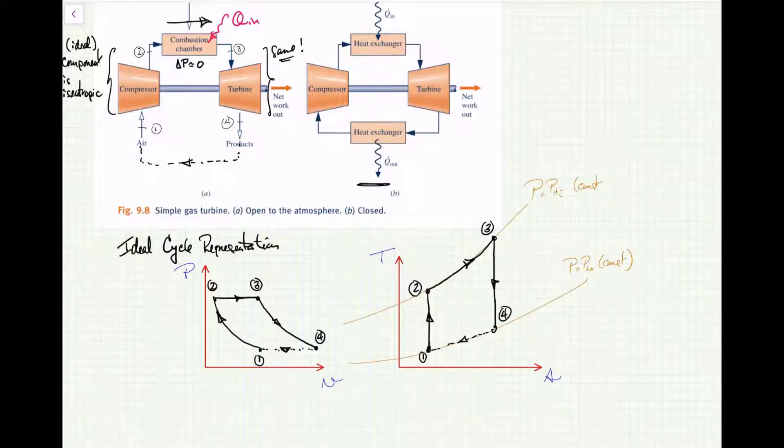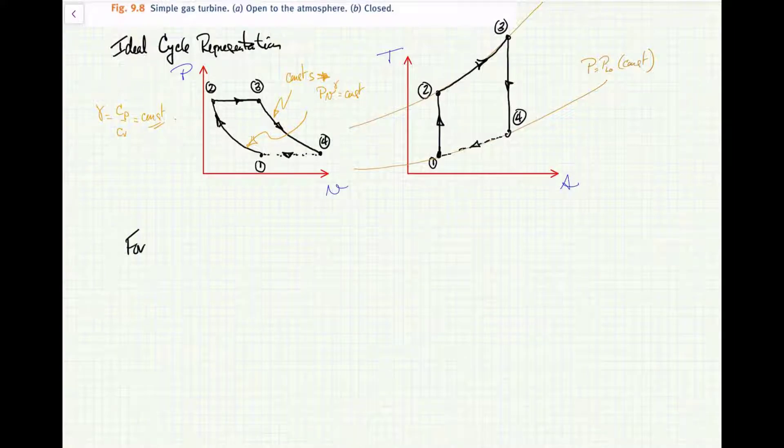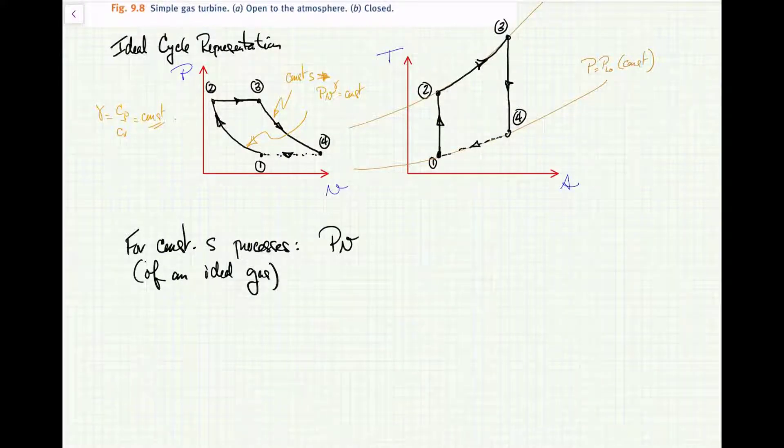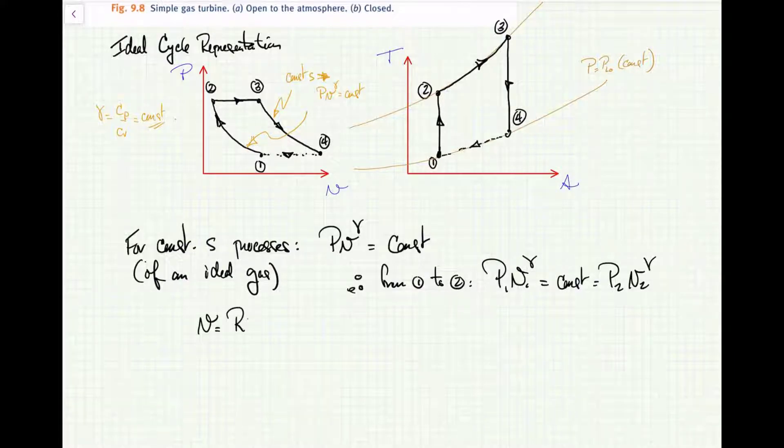Let's talk about the isentropic compression and expansion. A constant entropy process of an ideal gas means that along that curve, P V^γ is constant, where gamma is the ratio of specific heats, c_p over c_v. We're going to express these pressure endpoints 1 and 2, and then 3 and 4, in terms of the temperatures at those points using this isentropic relationship. P_1 V_1^γ equals P_2 V_2^γ, and the specific volume V equals RT/P since we're dealing with an ideal gas.